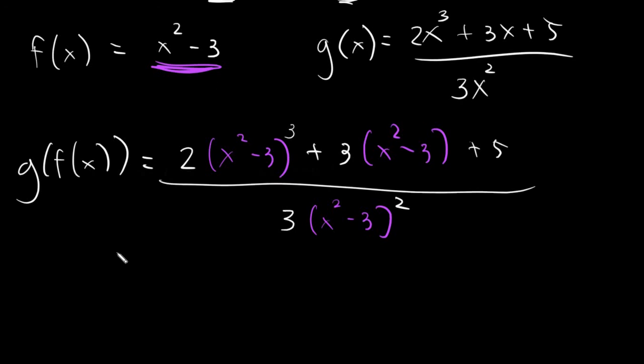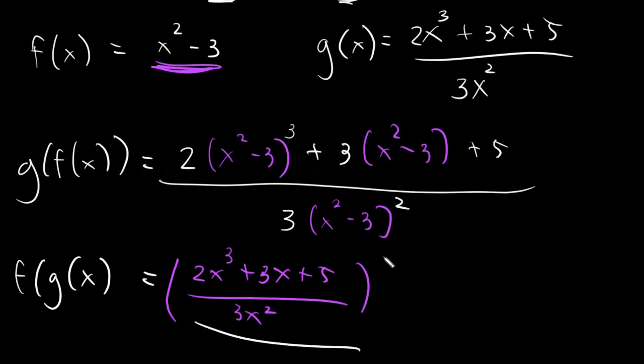And maybe let's do it the other way around. Say we have f of g of x. So in this case, we will have parenthesis 2x cubed plus 3x plus 5 over 3x squared, and we will have squared minus 3. So what happened? Only the x in f changed, and it changed to what? The value of your g.